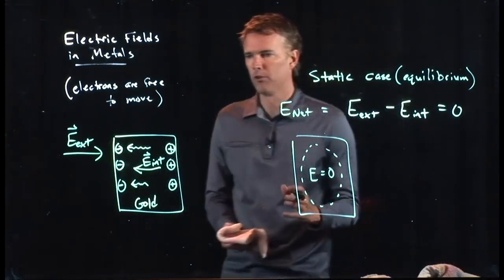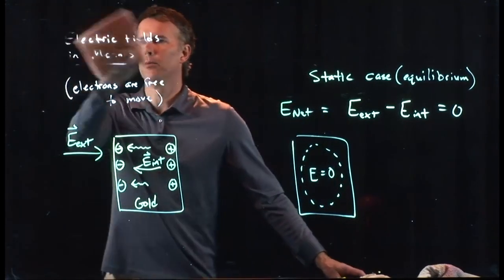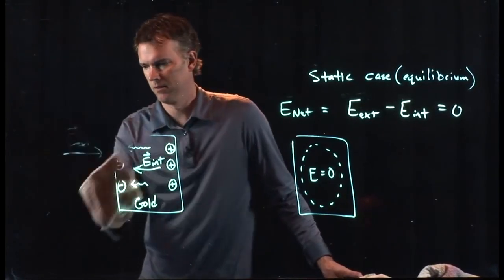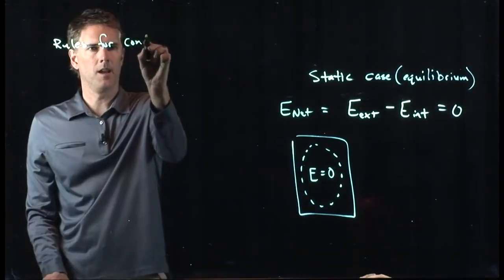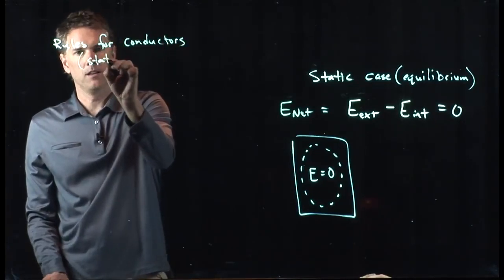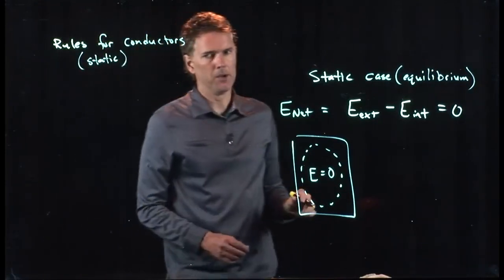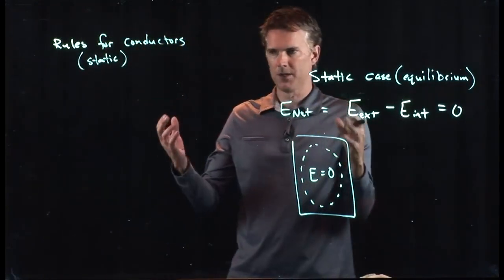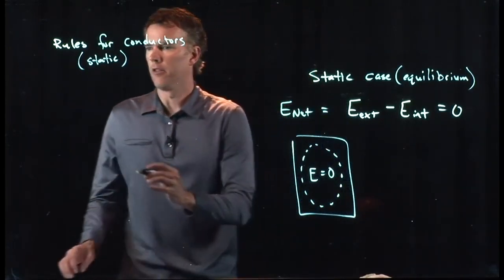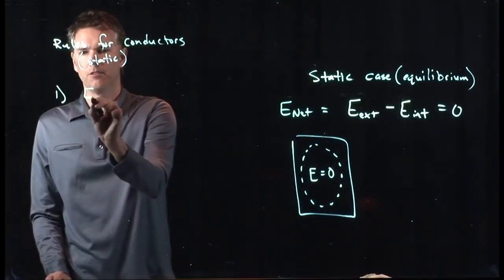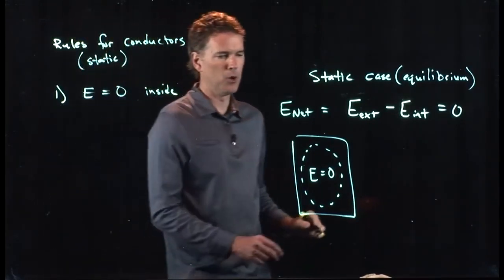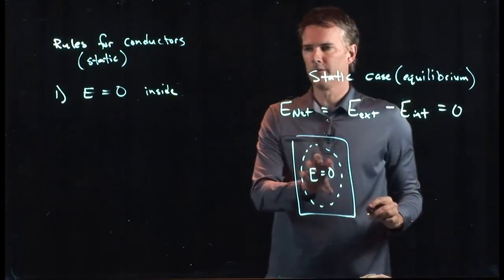And so we have rules for conductors. We have five separate rules that describe conductors in the static case. And I want you to make sure that you understand that this is the static condition, because later on we're going to talk about things that are actually moving, charges still moving. So the first rule is just what we said: E equals zero inside. If you are inside the metal, the electric field is zero.